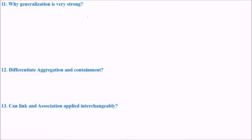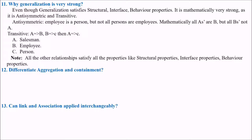Why generalization is very strong? Even though generalization satisfies the structural interface and behavioral properties, it is mathematically very strong because it is anti-symmetric and transitive. You know what anti-symmetric and transitive means. You know the equivalence relationship when you have anti-symmetric, transitive and reflexive. In those terms also we are talking that anti-symmetric and transitive.